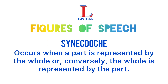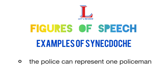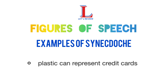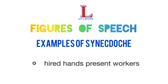Synecdoche occurs when a part is represented by the whole, or conversely, the whole is represented by the part. Examples include: wheels can represent a car, the police can represent one policeman, plastic can represent credit cards, coke can represent any cola drink, hired hands represent workers.